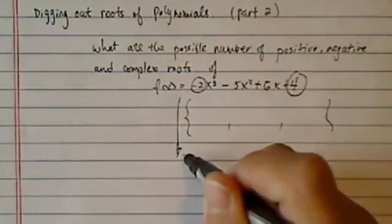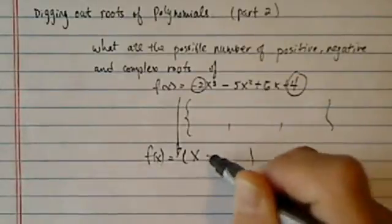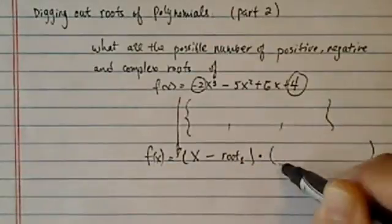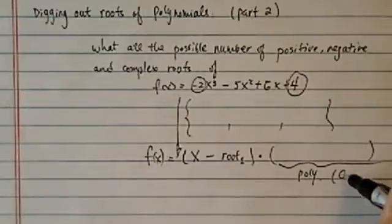Once you have a first guess, what you can do is you can rewrite this f of x in form of x minus this root 1 times another polynomial. For our case, it happened to be quadratic.